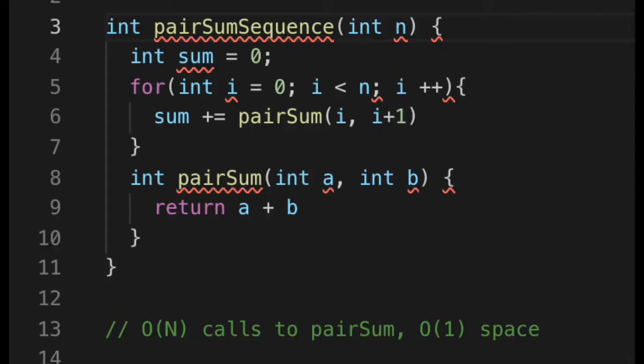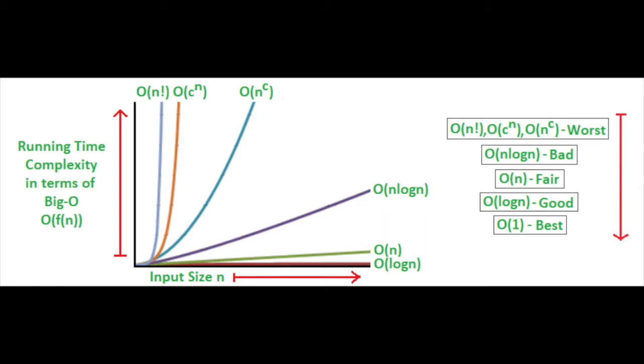Moving on to space complexity. Time is important, but it's also not the only thing that matters. Space is kind of like the amount of memory required by an algorithm. Stack space from recursive calls is included too. Code that runs through the problem once is O(N) space, and an adding situation would be O(1) space. She has a nice graph depicting the rate of increase of the common Big O runtimes for both space and time complexity.